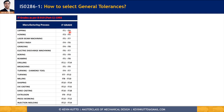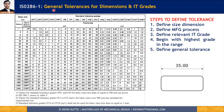For every manufacturing process there is an associated IT grade range. For example, lapping is the finest process with a range of IT1 to IT4, whereas sand casting ranges from IT6 to IT18. Once I know the basic dimension and the manufacturing process — which indirectly tells me the IT grade — I can find the tolerance value. My suggestion is always start with the roughest grade in that range; if required you can fine-tune it, but if the roughest grade meets your requirement you can save cost.